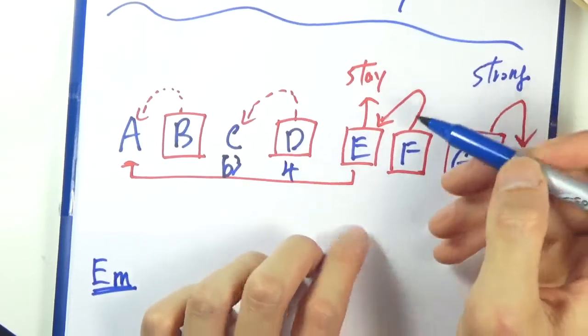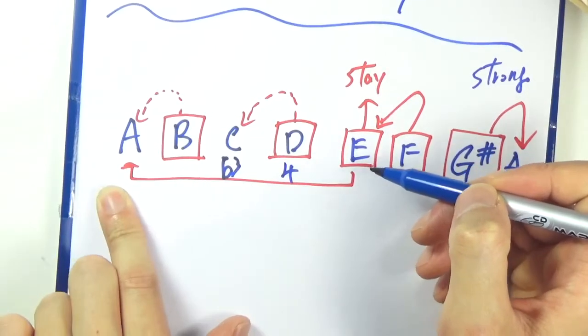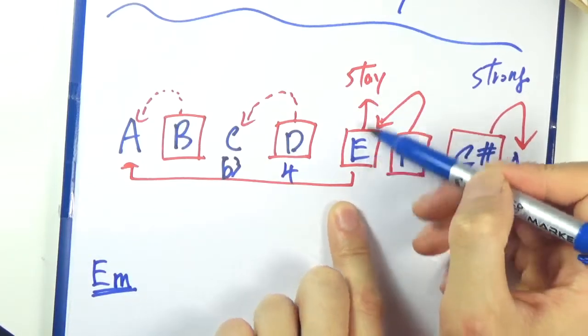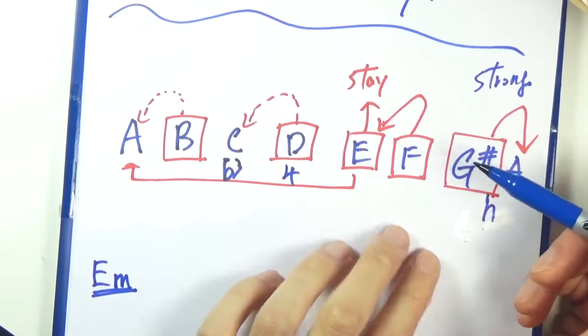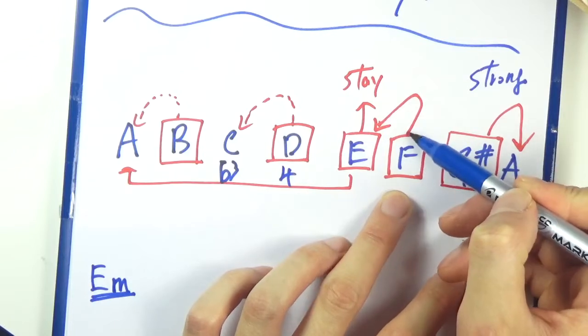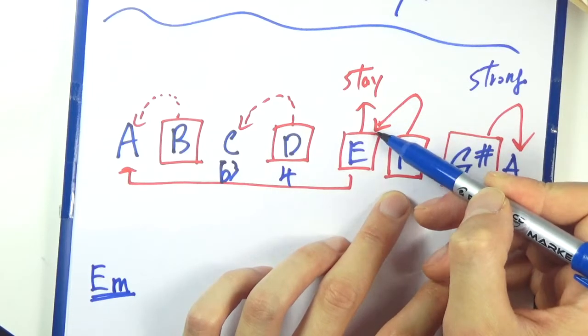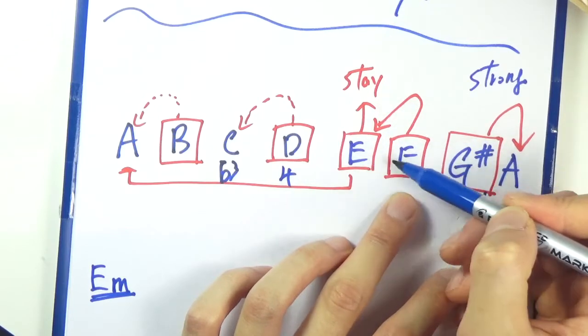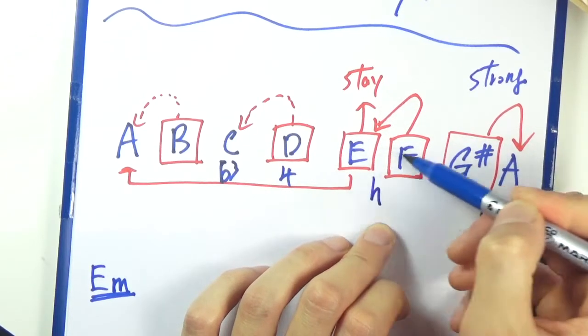E, you can resolve that down to A and you can also let it just stay put. So we have a new note here, F. F would resolve down a half step to E and it is actually a very strong resolution here. It has a strong tendency to go to E because of the fact that it's only a half step apart.